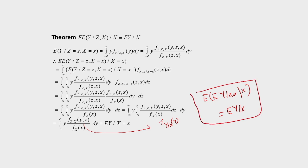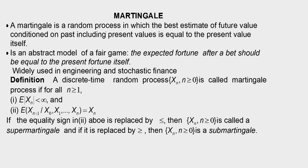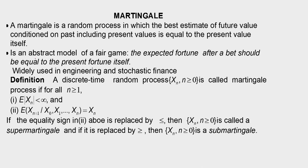With this background, we will go to the definition of martingale. A martingale is a random process in which the best estimate of the future value conditioned on the past including the present is equal to the present value itself. Knowing past and present values, the best estimate for the future value is the present value itself. This is an abstract model of a fair game: the expected fortune after a bet should equal the present fortune itself, because there is a probability of losing and winning that is fifty-fifty.